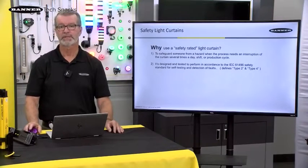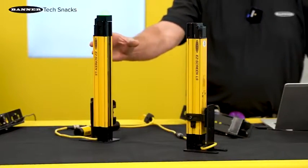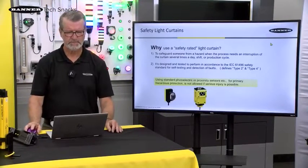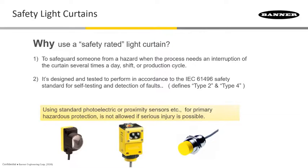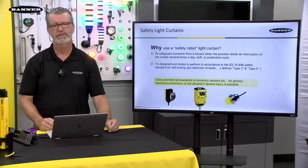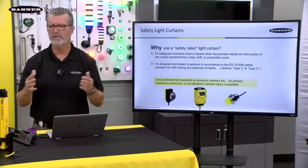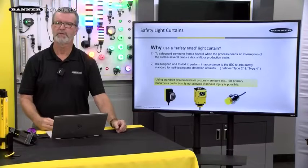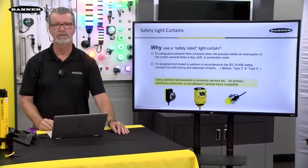There are different types of curtains — there's a Type 4 and a Type 2, depending on what's internal. I'll show you a slide that compares Type 2 to Type 4. The question comes up: well, why can't I use just normal photoelectrics? The standards define that you need to have something that's safety-rated, with redundancy in there. Just using normal photoelectrics for hazard protection is not allowed. They can be used in other areas, such as muting sensors and that type of thing, but not for the primary safety function.